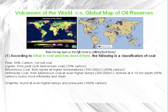Anthracite coal, from bituminous coal at even higher temperatures around 200–300°C, is formed at 8–10 km depth, contains 95% carbon, and burns most efficiently and cleanly. Graphite is found at even higher temperatures and pressures and is 100% carbon.